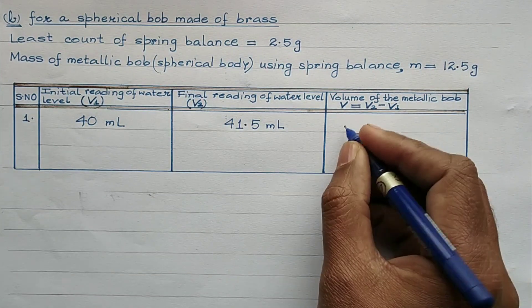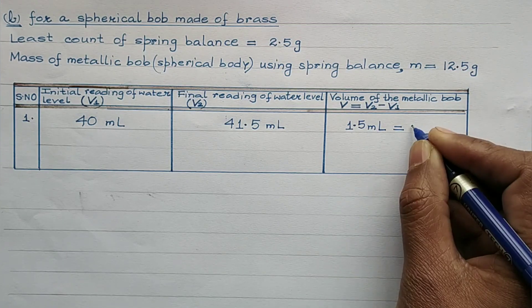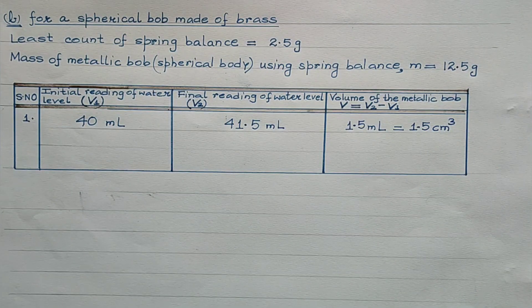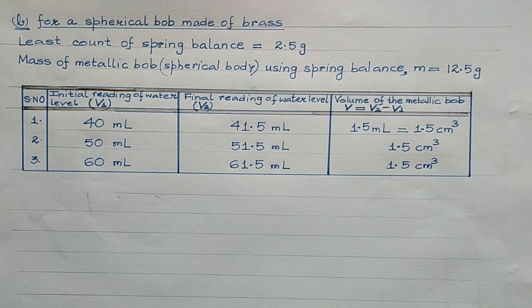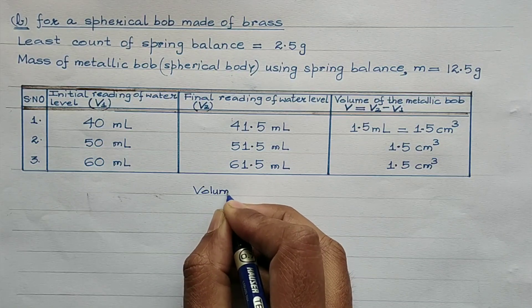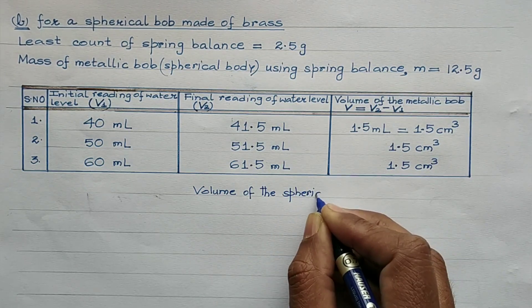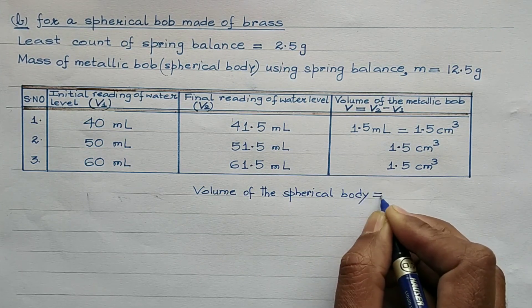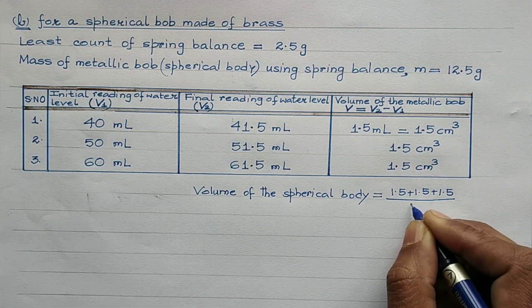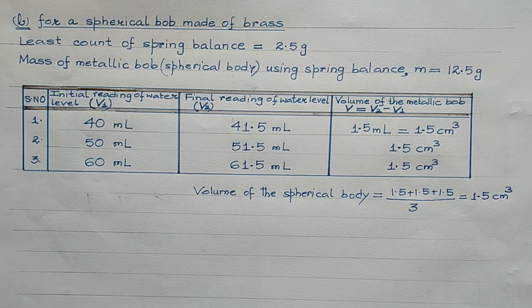The difference between the two readings gives the volume of the body. The level of water rises on immersing the body, so the difference in volume gives the volume of the body: 1.5 ml equals 1.5 cm³. Proceeding in the same manner, keeping the water level initially at 40, 50, and then 60, we record three readings. The mean volume of the spherical bob is the average of these three values: (1.5 + 1.5 + 1.5) / 3 = 1.5 cm³.